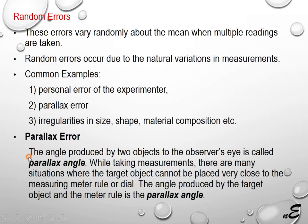Parallax error: the angle produced by two objects to the observer's eye is called the parallax angle. While taking measurements, there are many situations where the target object cannot be placed very close to the measuring meter rule or dial. The angle produced by the target object and the meter rule is the parallax angle.